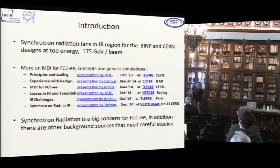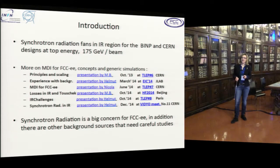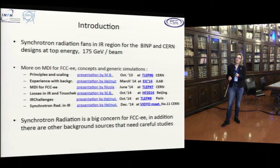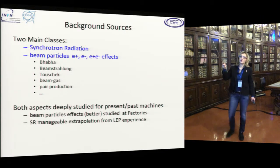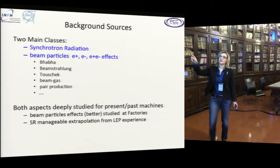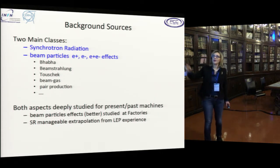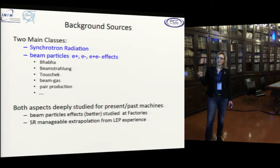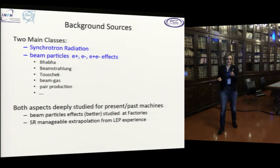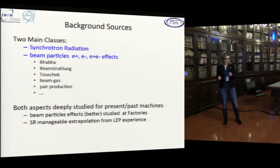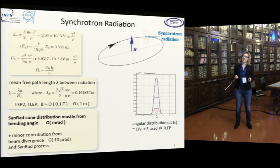Just to reference previous presentations: synchrotron radiation is a big concern for FCC-ee, but in addition there are other background sources that need careful studies. We have two main classes of background sources apart from synchrotron radiation: beam particle effects including single beam and IP backgrounds. Both aspects have been deeply studied for past machines, but there are many novel issues with FCC given its very high energy and challenging design.